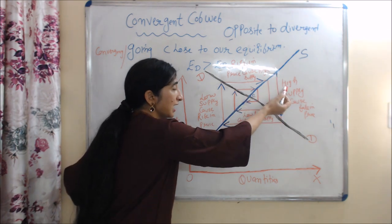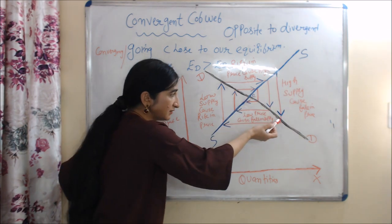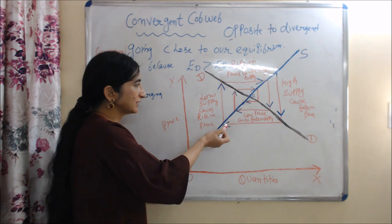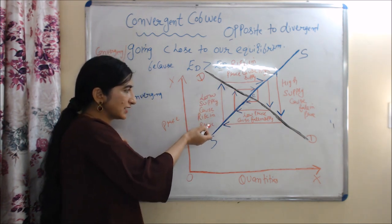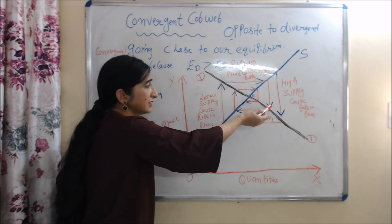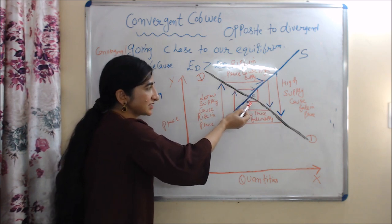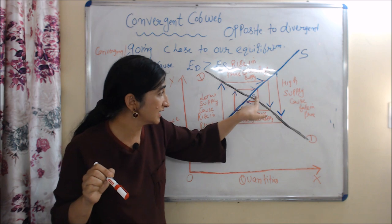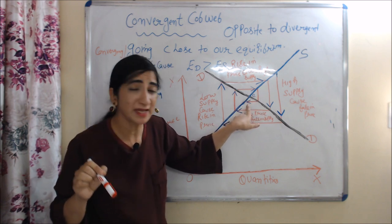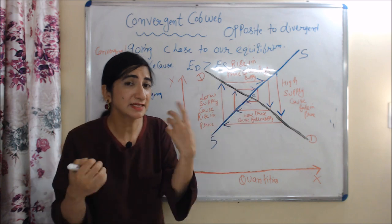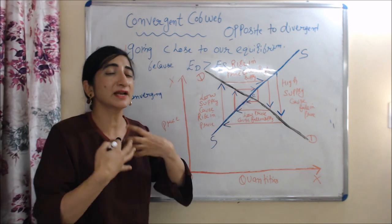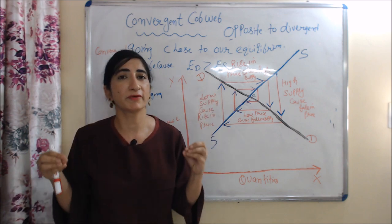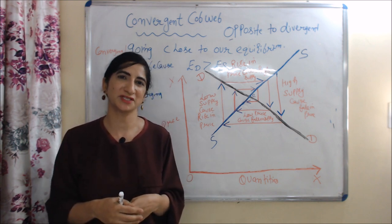Suppose we start from here: high supply causes a falling price, then we move in this direction where low price causes a fall in supply, then we move in this direction where low supply causes a rise in price, then we move here, here, and finally we reach here. You can see we are very close to our equilibrium point — this is exactly our convergent cobweb, where we are converging with our equilibrium. This is all about the Cobweb Model. Thank you so much for watching. Bye, take care.